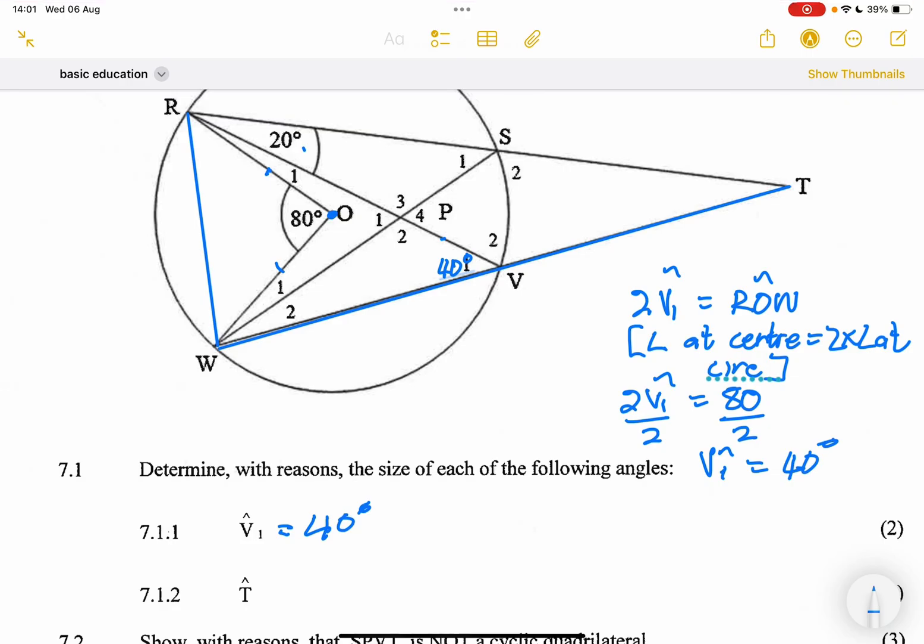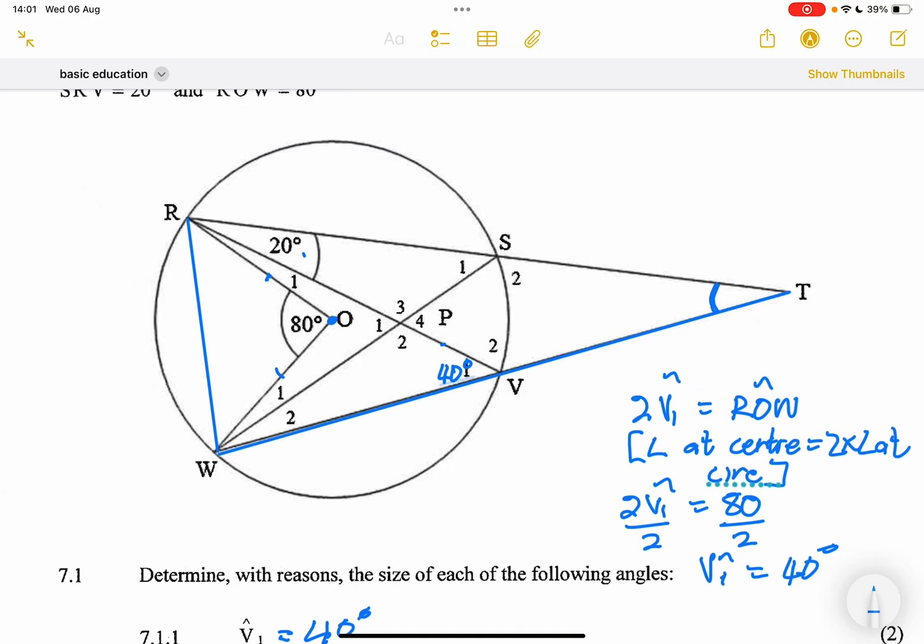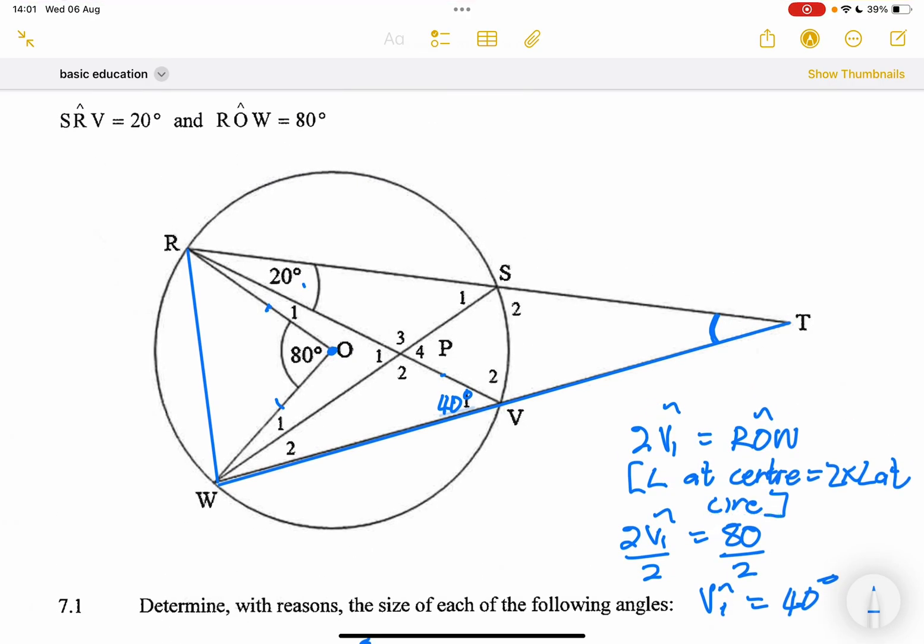The next angle that they want us to determine is angle T. They gave us angle SRV which is 20 degrees. This angle is actually equal to angle W2, so this angle here is 20 degrees as well.